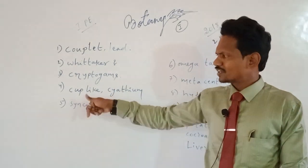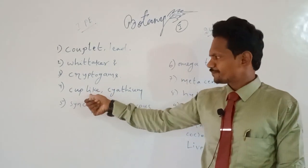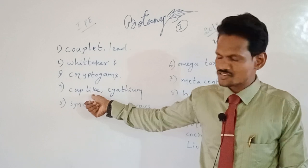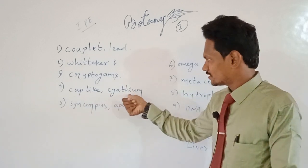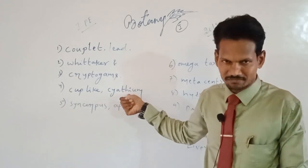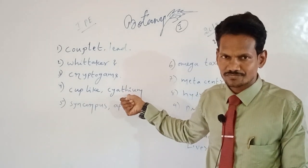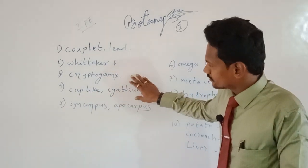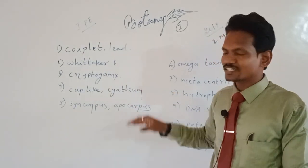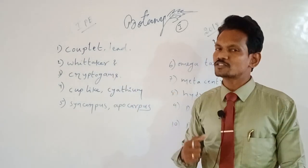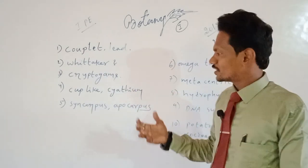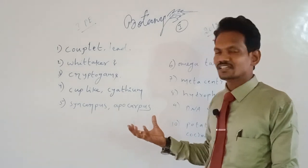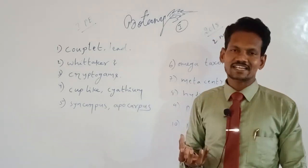Fourth question: what type of inflorescence is the cup-like structure? The answer is hypanthodium. The cup-like inflorescence is known as hypanthodium, and the example is Ficus.